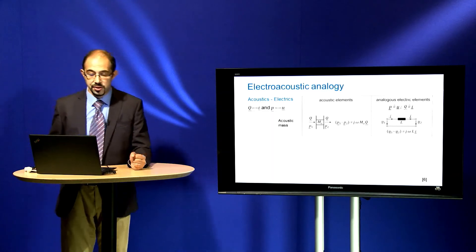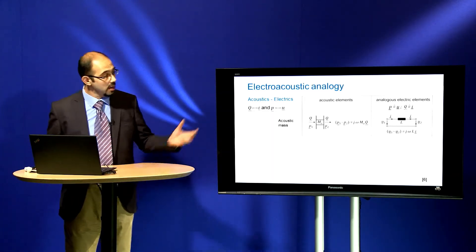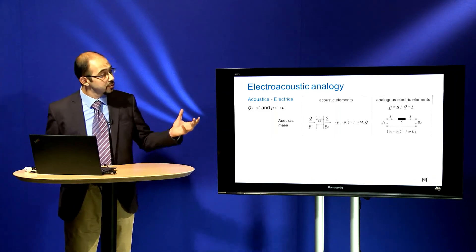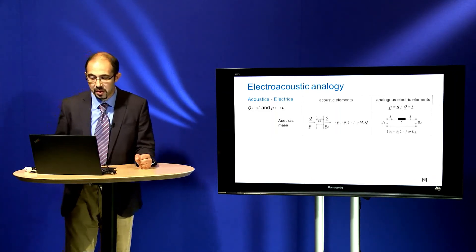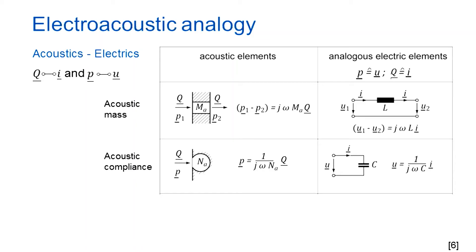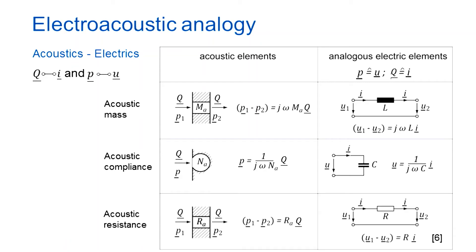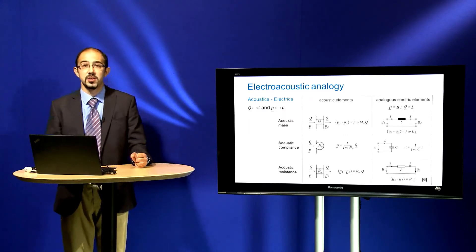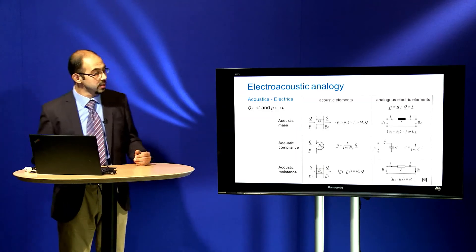Starting with acoustic mass, we are talking about an open-ended tube. An open-ended tube means acoustical mass, and in the mobile analogy it corresponds to the inductance, as we can see in this slide. The second element is the acoustical compliance, which can be defined as a cavity, and it corresponds to the capacitance. The third element is the acoustical resistance, corresponding to an open-ended narrow tube with porous material, and in the mobile analogy it corresponds to the resistance.